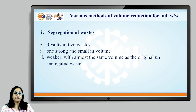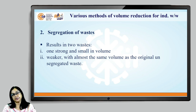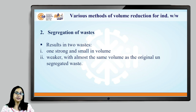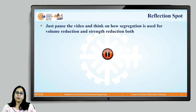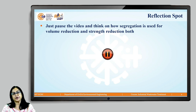The second method is segregation of waste. We have already studied classification and segregation as a method of volume reduction; here we are going to refer to it from the viewpoint of strength reduction. Normally, segregation of waste results in two streams: one stream which is strong and small in volume, and another which is weak but with almost the same volume as the original unsegregated waste. Pause the video and think about how segregation of waste can be used for both volume reduction and strength reduction.